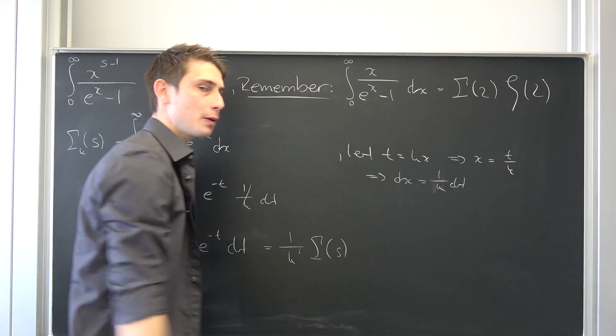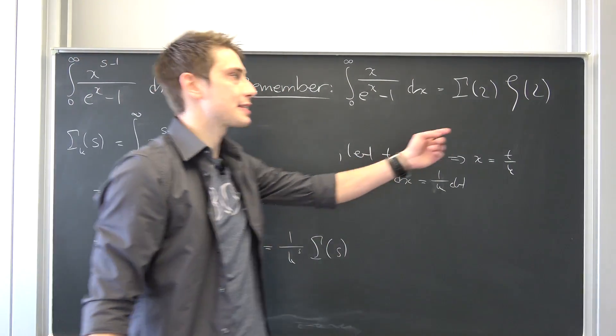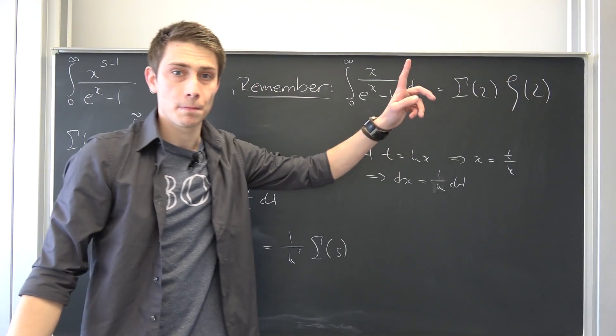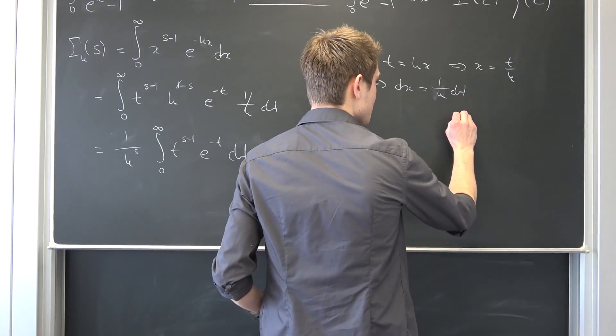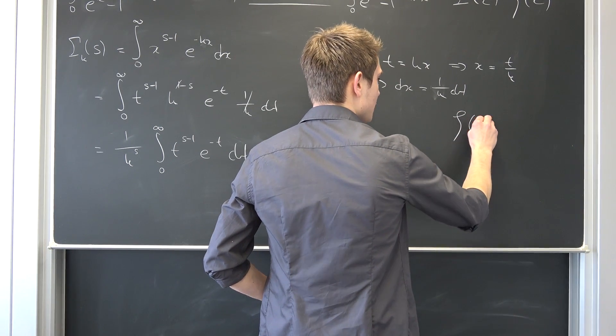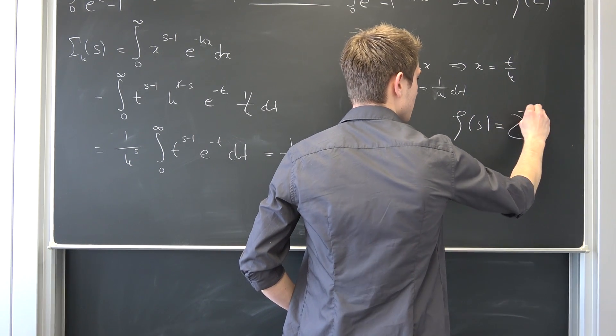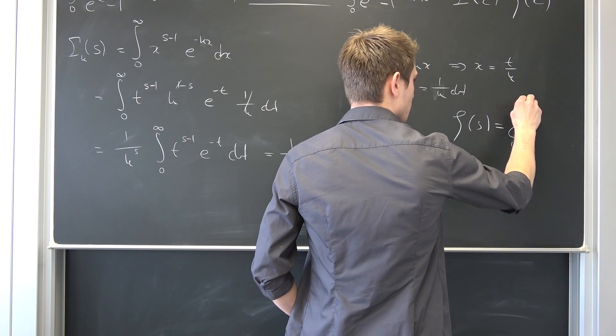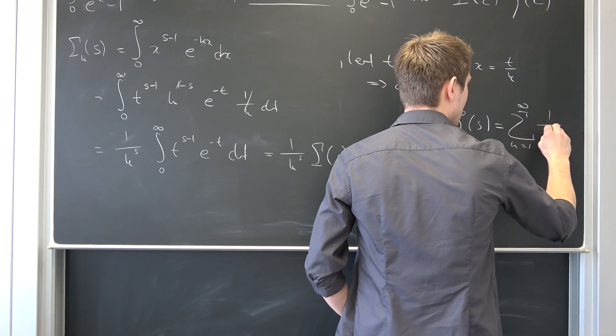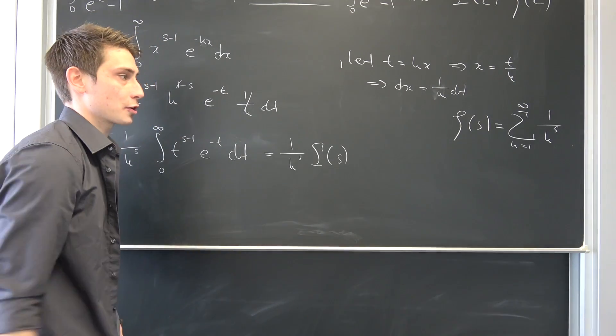Here, in this Putnam problem, we actually got that we had zeta of 2 right here. I want you guys to remember what the Riemann zeta function actually is. Zeta of s is nothing but the sum running from k equals to 1 to infinity of 1 over k to the s power. That's the Riemann zeta function.